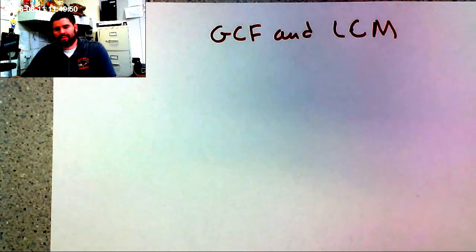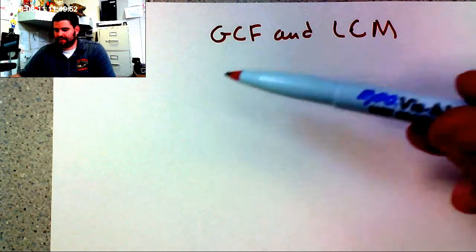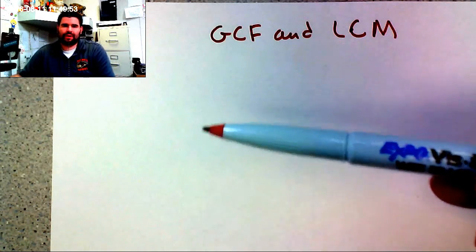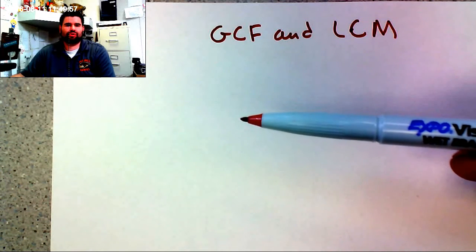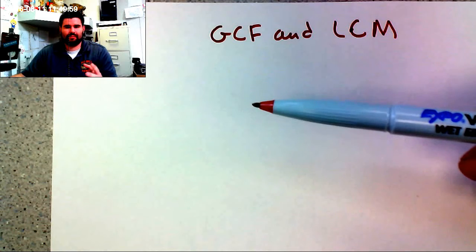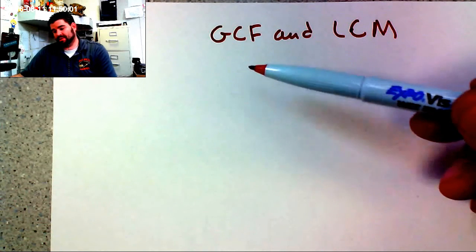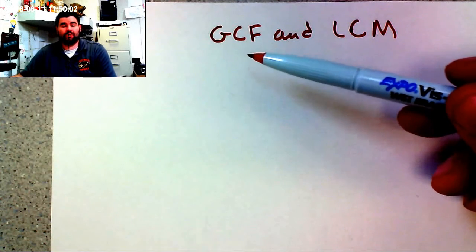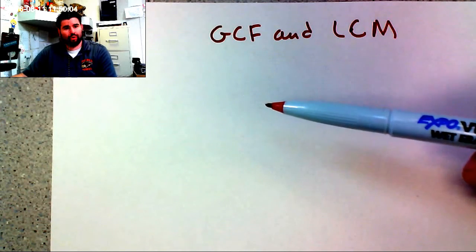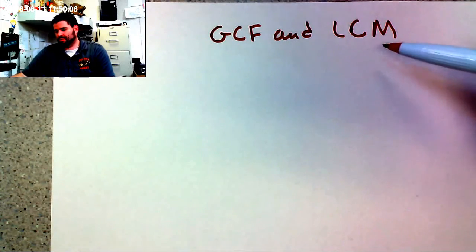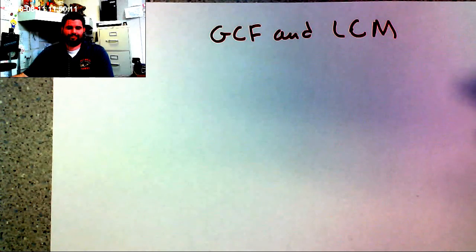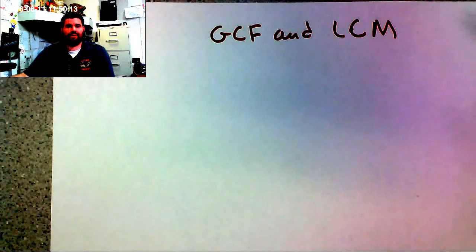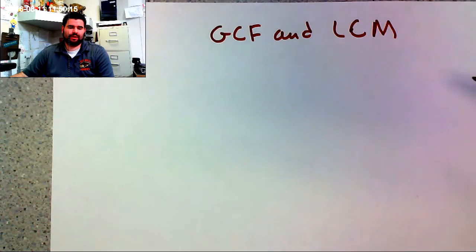The greatest common factor is the biggest factor that the two numbers in the set share — that's the biggest number that they share, thus the name greatest common factor. The lowest common multiple is the smallest multiple that the two numbers share. I'm going to show you a couple different methods on how to find them.